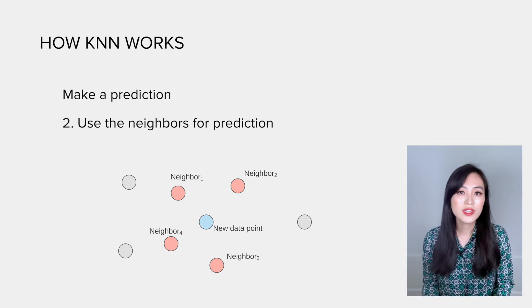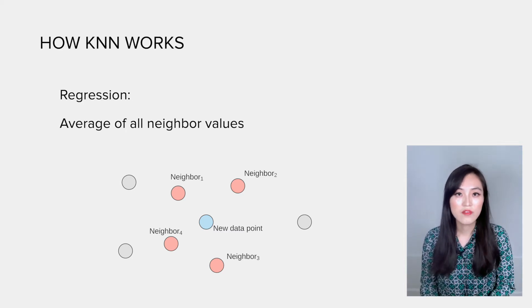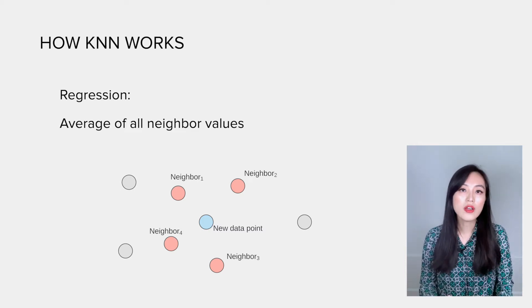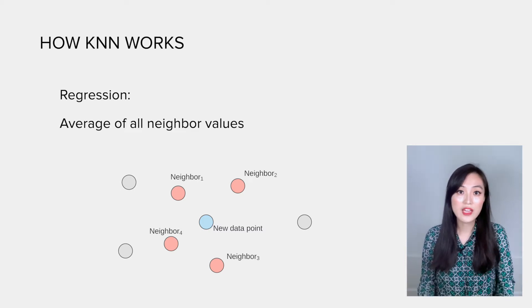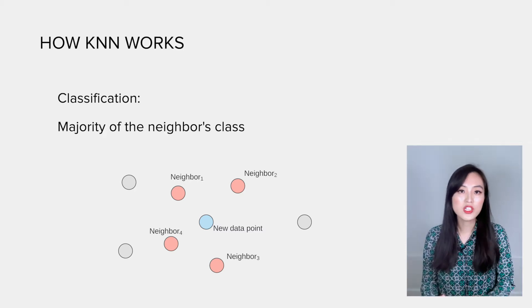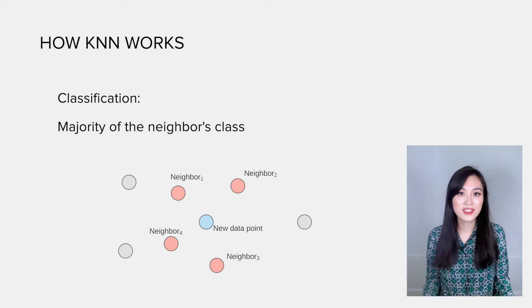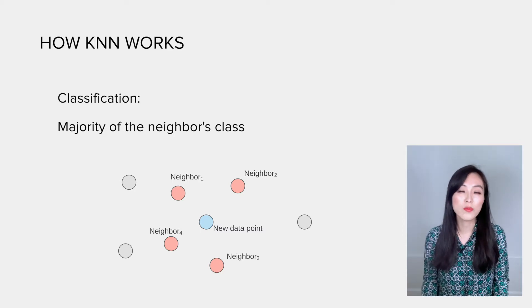Then we could use the closest neighbors to predict the outcome. If it's a regression task, we'll take the average of all its closest neighbors' values and that will be the prediction. If it's a classification task, the prediction will be the majority of the class of its neighbors. And that's it. That's how we can use KNN to predict the outcome of a new data point.